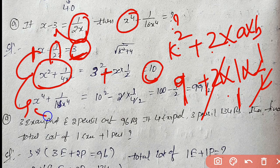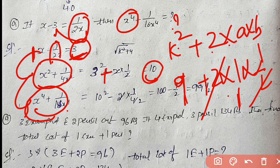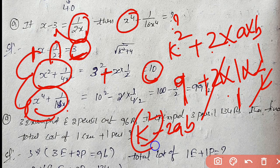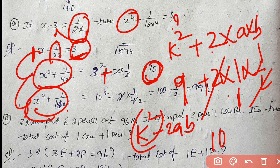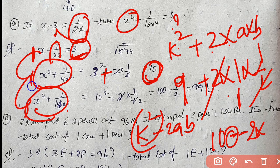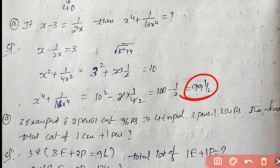Again squaring, x power 4 plus 1 by 16x power 4. This is a squared minus 2ab. k squared value is 10 squared, which is 100 minus 2 times 1 times 1 by 4. So 100 minus 2 divided by 4 equals 100 minus half equals 99 and a half.